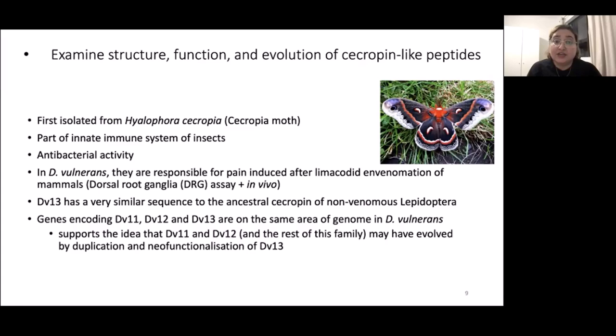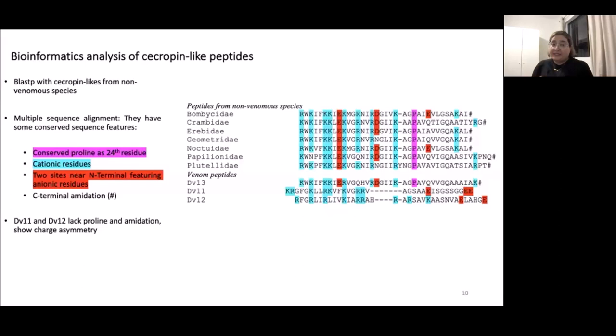We did a BLAST with these three sacropine-like peptides from Doratifera vulnerans and sacropines from non-venomous species. Using multiple sequence alignment, we showed that they have some conserved features. For example, all the non-venomous ones and DV13, which is similar to ancestral sacropine, have this conserved proline as their 24th residue. They all have cationic residues at the N-terminals and two sites near N-terminals have anionic residues. But DV11 and 12 don't have the proline and also don't have the amidation. They show a charge asymmetry—they are positive on N-terminals and negative on C-terminals.